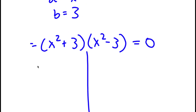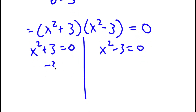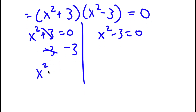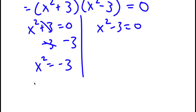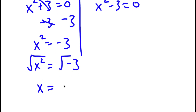This gives me two equations: x squared plus 3 equals 0, and x squared minus 3 equals 0. Starting with x squared plus 3 equals 0, I subtract 3 from both sides to get x squared equals negative 3. Taking the square root of both sides, x equals positive or negative square root of negative 3.